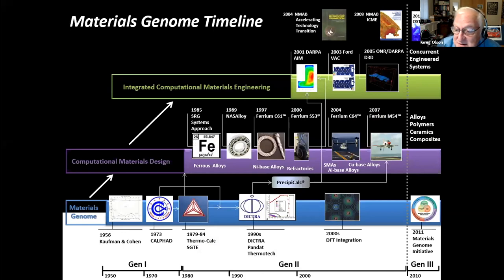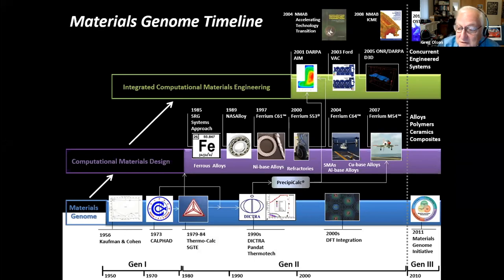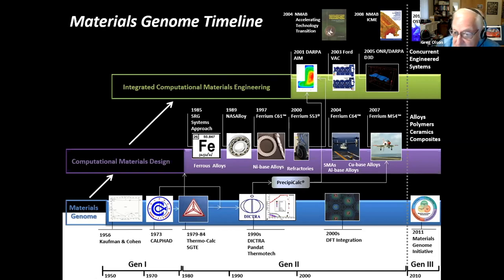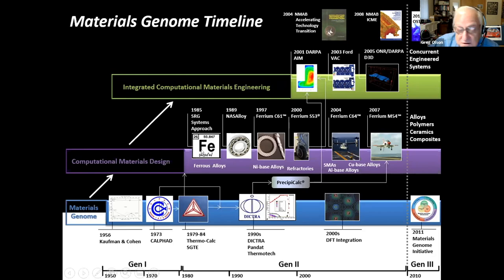The decade of the Materials Genome Initiative has clearly demonstrated that the genome we have for materials is the CALPHAD fundamental data system, whose origins can be traced back to Kaufman and Cohen in the 1950s. It was the evolution of that software into commercial software with the introduction of ThermoCalc that inspired our founding in 1985 of our steel research group to build out an approach to computational materials design specifically structured to use the predictive power of CALPHAD fundamental data. This led to a number of demonstration projects of steels that ultimately led to the founding of Questek in the late 1990s.